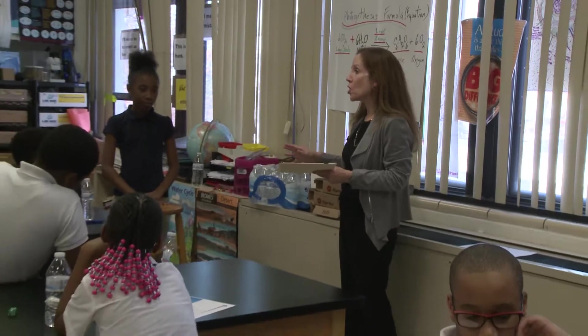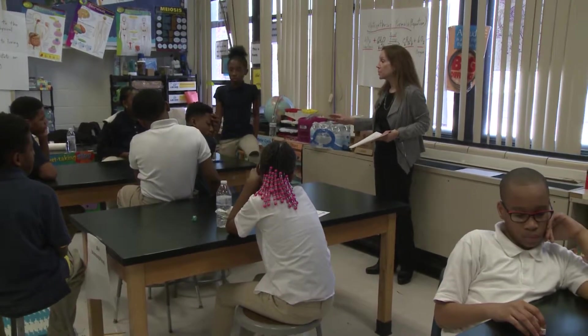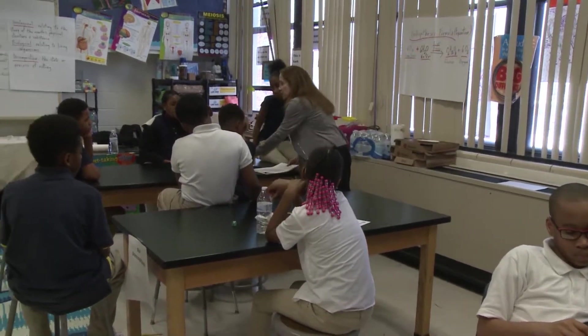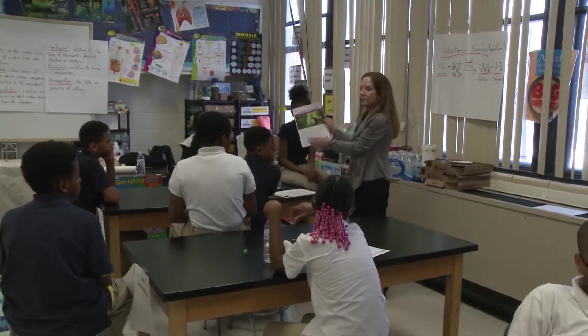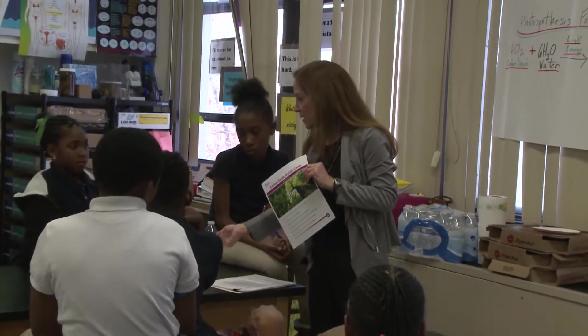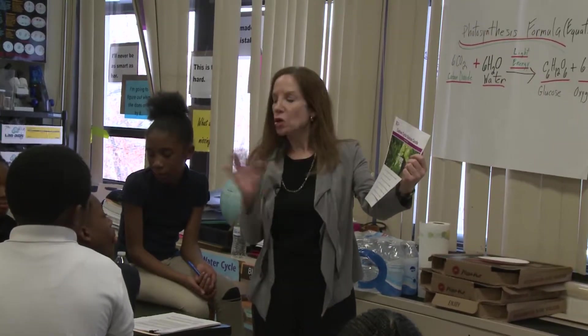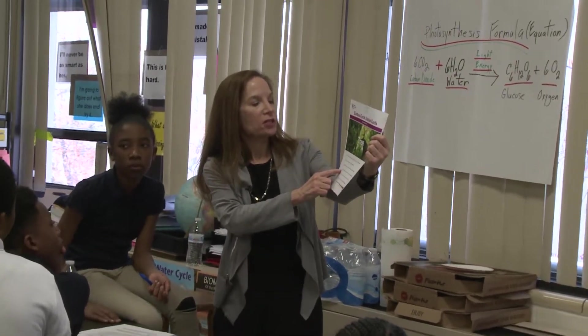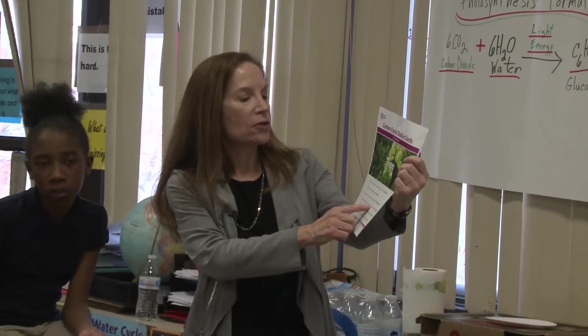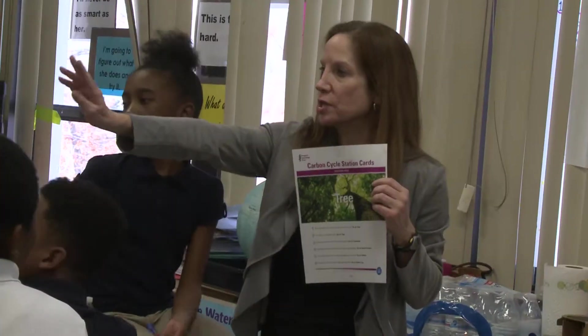Now we're going to learn more about the carbon cycle by playing a little game. You're going to move to the six stations on the six tables here, and at each station you're going to have a card and a dice. This is the tree station — you're going to roll the dice. It came up with a four, so on your worksheet you look at four: 'Someone cuts down the tree to make wood products — go to the wood product station.' You can see the wood product station is right over here.